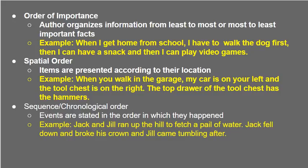Then we have sequence and chronological order. The author states events in the order in which they happened. You've probably heard this nursery rhyme: Jack and Jill ran up the hill to fetch a pail of water — that's the first thing they did. Then Jack fell down and broke his crown, and Jill came tumbling after. Speaking of crown — that means he hurt his head. So sequence and chronological order means events are stated in the order in which they happened.